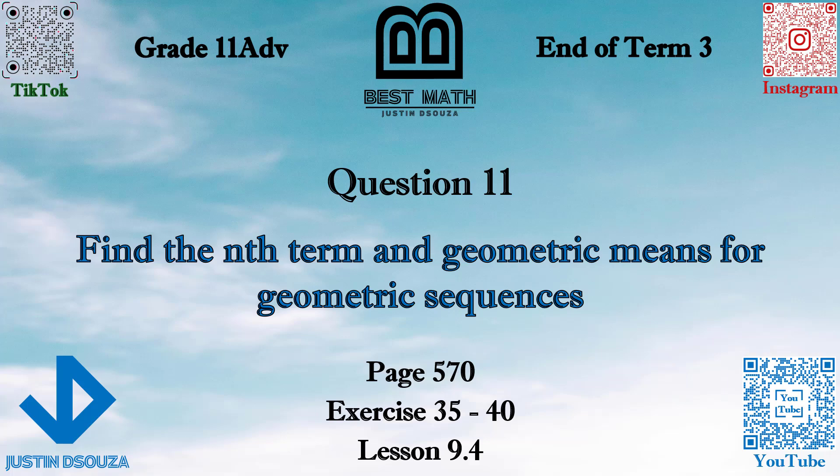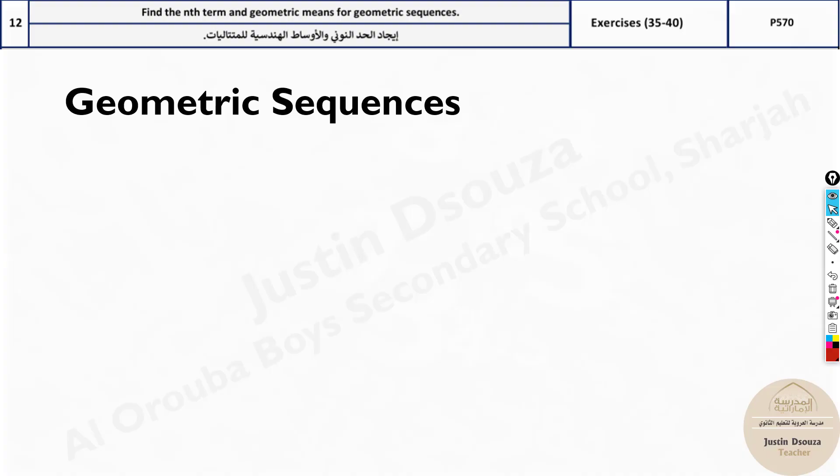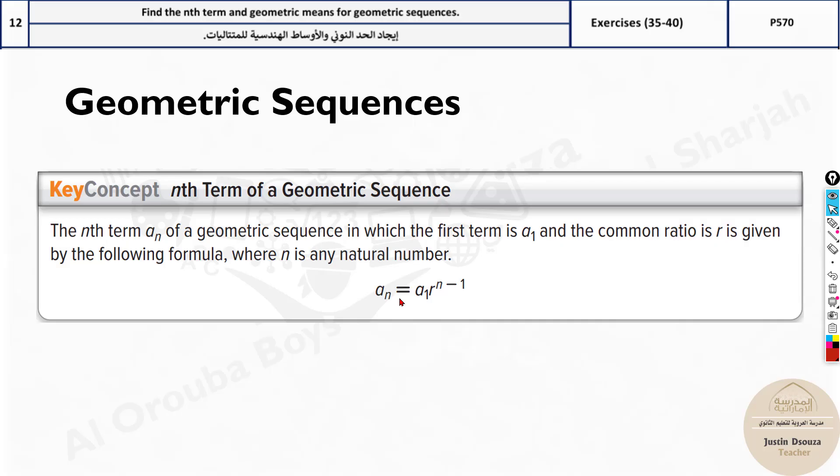The question is about geometric sequences. We have to find the nth term and geometric means. The geometric sequence formula is a_n equals the first term multiplied by r^(n-1). You might find this similar to the arithmetic sequence but there it was all about plus. Here you have to multiply because geometric means you're multiplying the number. This r is the common ratio, a_1 is the first term, and n is the number of terms.